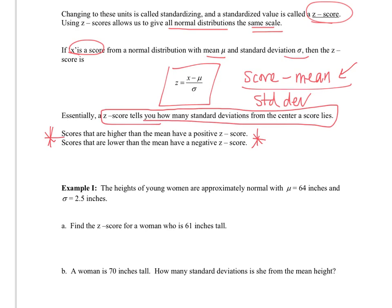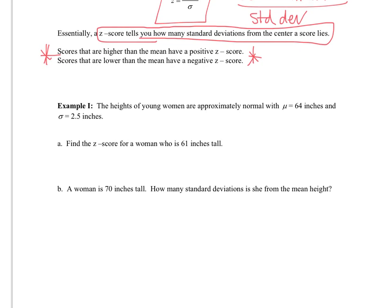If we look at our first example, it says the heights of young women are approximately normal. This tells us we can use the standard deviation rules. They're approximately normal with μ = 64 inches and σ = 2.5. We want to find the z-score for a woman who is 61 inches tall. So z equals her score minus the average divided by 2.5.